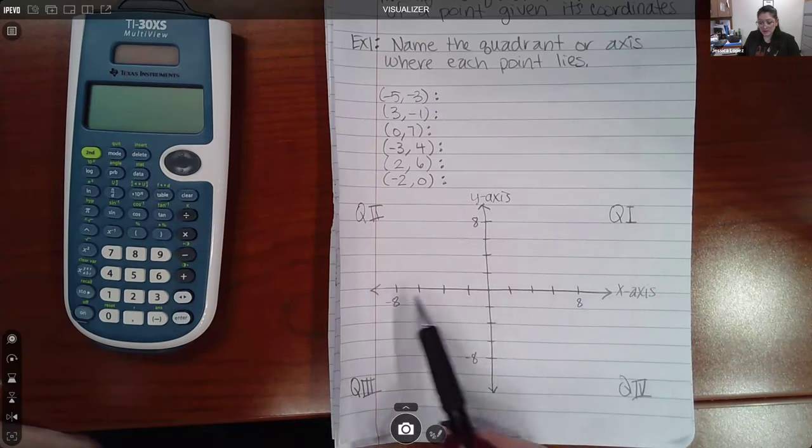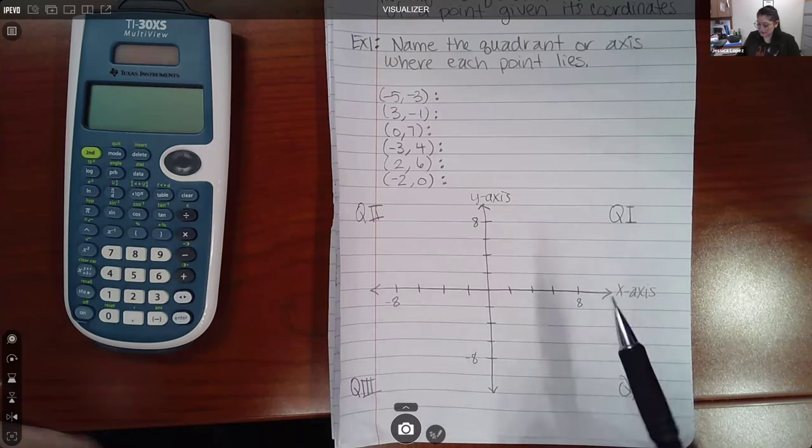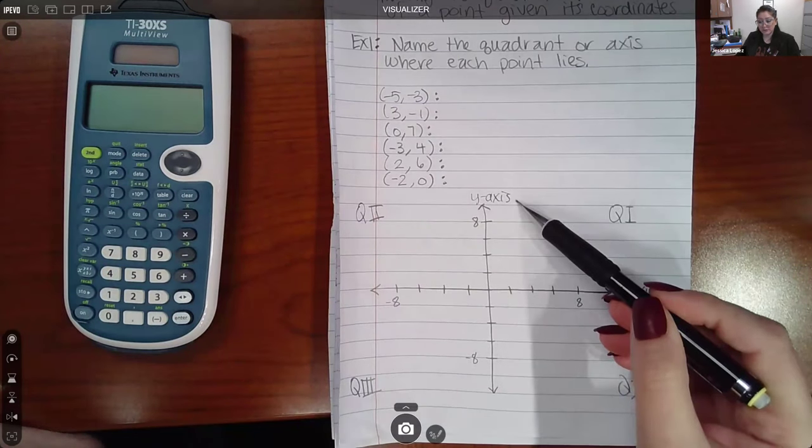The horizontal axes is called the x-axis and the vertical axes is called the y-axis.